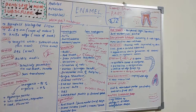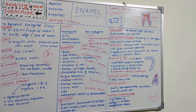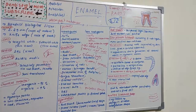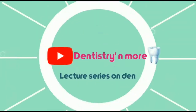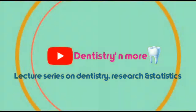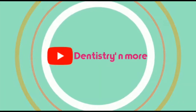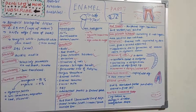The DEJ (dentino-enamel junction) is another important structure — it is the junction of dentine and enamel, which has a scalloped structure, and is associated with enamel spindles and odontoblastic processes. Let's now look at these surface structures and the DEJ in detail.